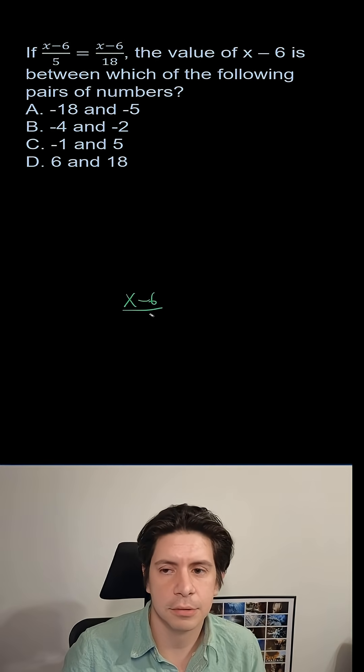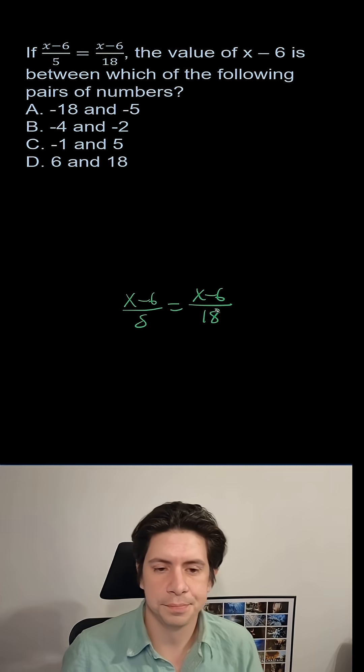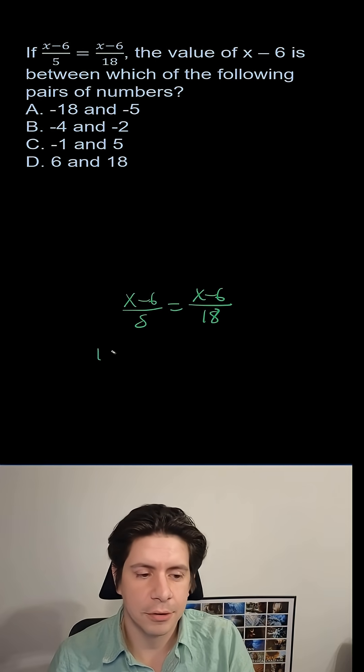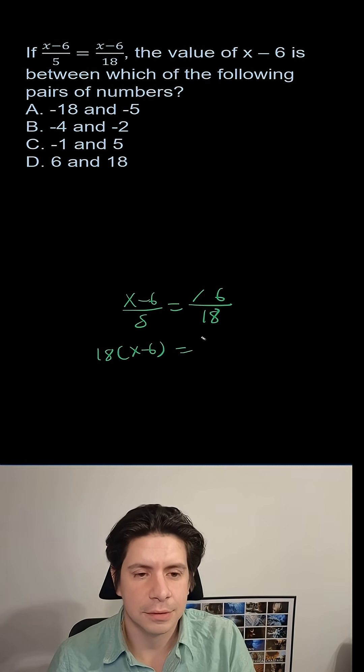(x-6)/5 = (x-6)/18. We're going to cross multiply and get 18(x-6) = 5(x-6).